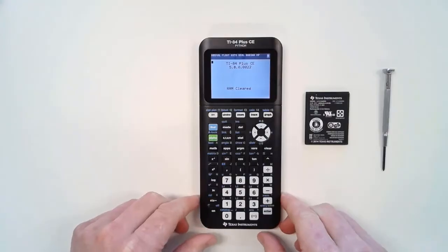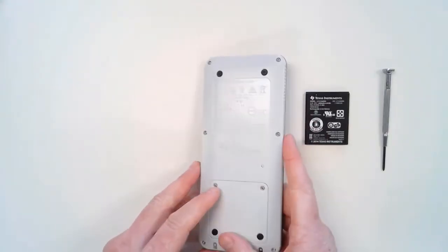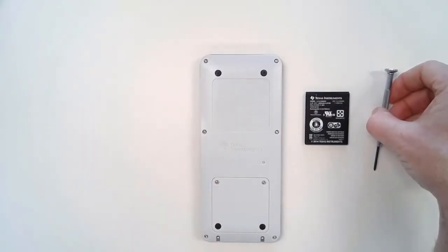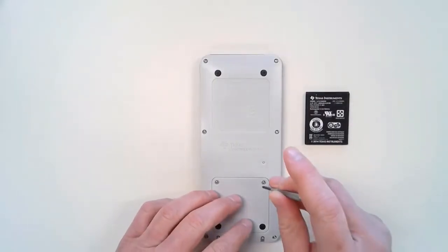I've got my TI-84 Plus CE Python here. I'm going to turn it over and here you see the battery panel. It's secured by two Phillips head screws, which I will now loosen.